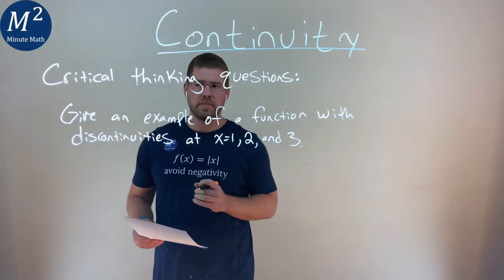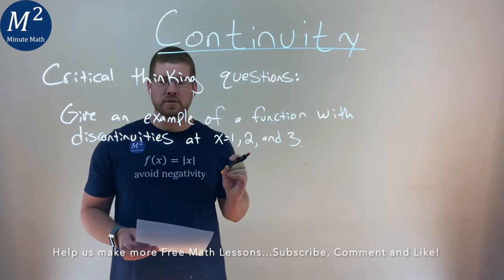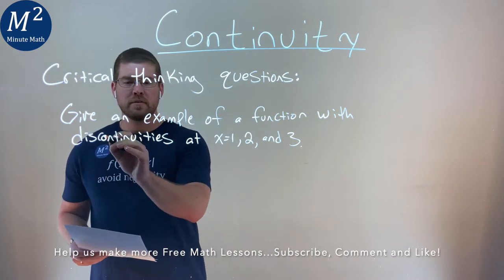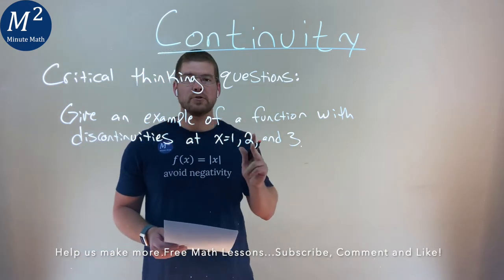We're given this critical thinking question: Give an example of a function with discontinuities at x equals 1, 2, and 3.